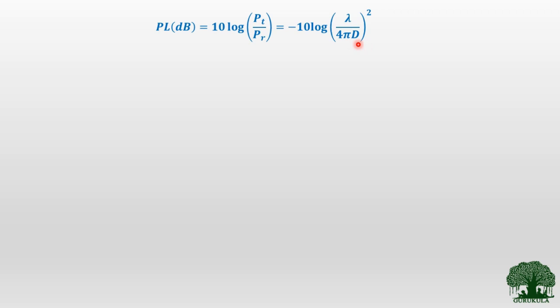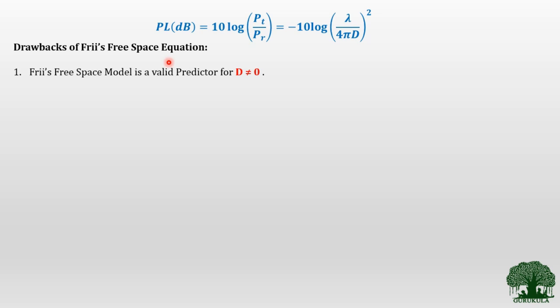When observing this, the path loss is directly proportional to the square of the distance between the transmitter and receiver. This is the final path loss model for Friis free space. But the Friis free space model comes with certain drawbacks. The first drawback is that it is a valid predictor only when D ≠ 0. If D equals 0, the entire equation becomes infinity — that is one drawback.